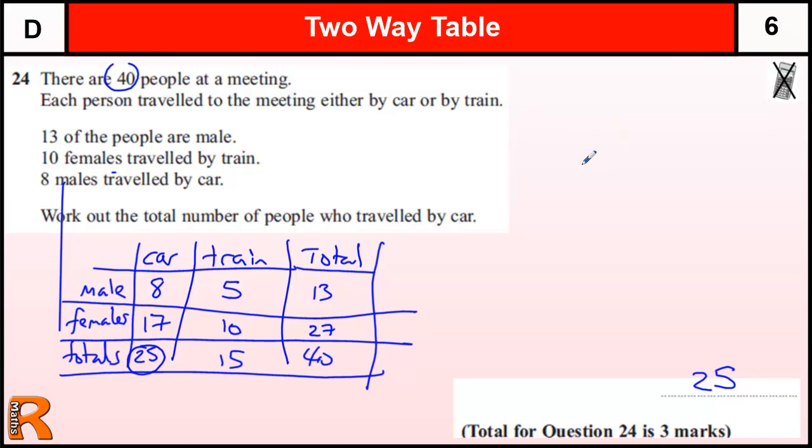And there are two method marks here. So long as you are doing something that is correct, which will eventually lead to the answer, so long as you don't make a mistake, you'll probably get one or two method marks, even if you get the answer wrong. But if you use a table, it should be fairly straightforward to get it right.